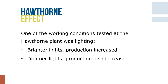One of the working conditions tested at the Hawthorne plant was lighting. When they tested brighter lights, production increased. When they tested dimmer lights, production also increased. Researchers observed that productivity almost always improved after a lighting change — any change — but eventually returned to normal levels. Workers appeared to try harder when the lights were dimmed, simply because they knew they were being evaluated.